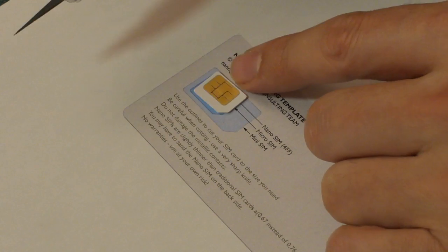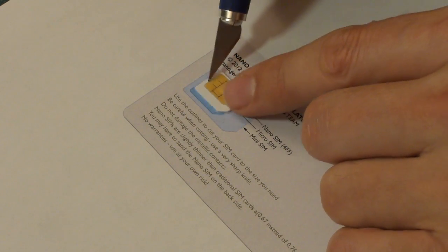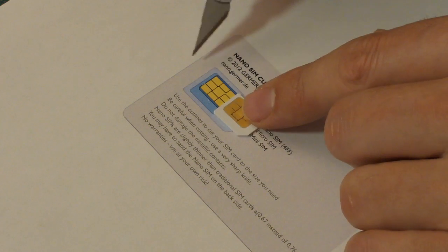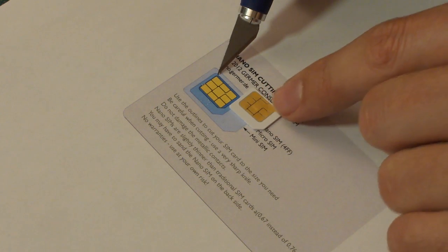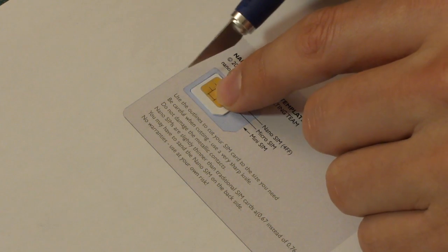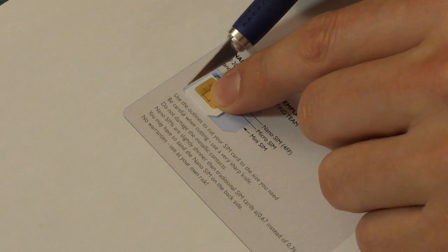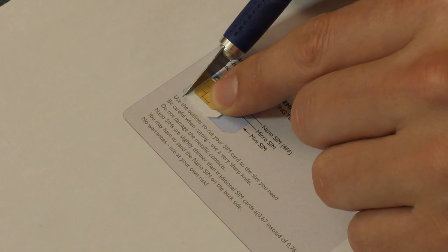So this one's a bit larger than the nano-SIM, which is the smaller area. What I'm going to do now is just use my cutter to mark some of the edges that I will need to cut on.